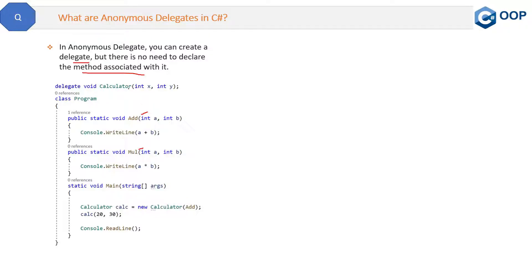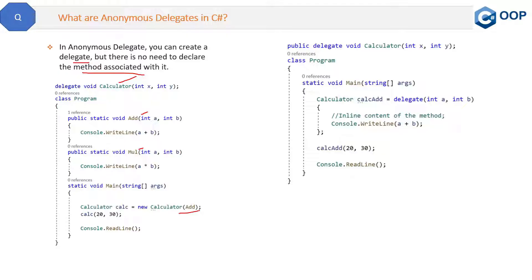Add, multiply, and then we are referencing these methods in this delegate, which is Calculator, and then we are passing the method as a parameter in the Calculate delegate. So that is a normal delegate. Now here is the anonymous delegate.